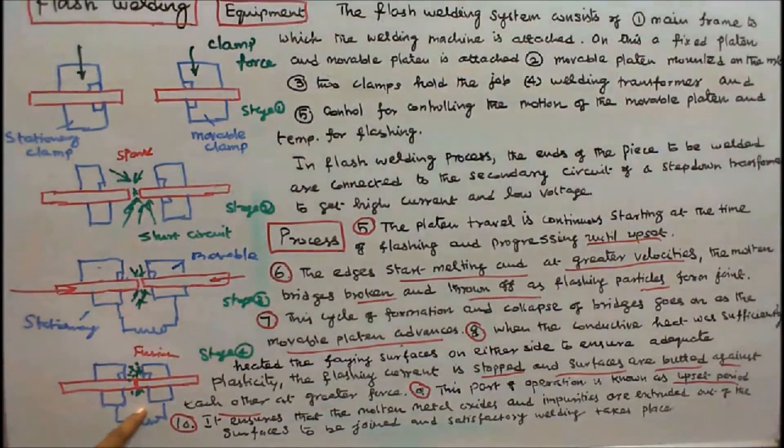6. When the conductive heat has sufficiently heated the faying surfaces on either side to ensure adequate plasticity, the flashing current is stopped and surfaces are butted against each other at greater force. This part of operation is known as upset period.